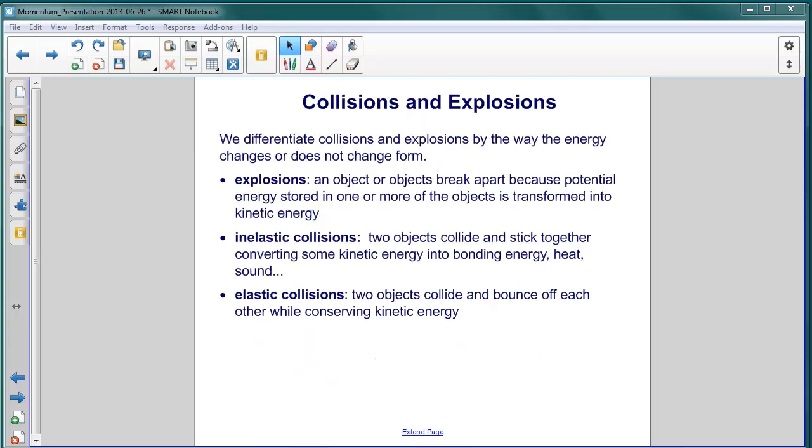We just described events that can take place in an isolated system. We looked at collisions and explosions. We can differentiate these different types of collisions and explosions by the way the energy changes or doesn't change form. So, remember, momentum is conserved, total energy is conserved, but energy can change form. So, in an explosion, an object or objects break apart because potential energy stored in one or more of the objects is transformed into kinetic energy. An example of that would be the potential energy stored in a chemical explosive. When that goes off, it becomes kinetic energy pushing the objects apart.